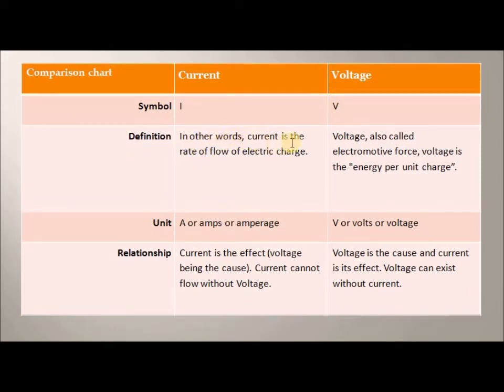In definition, in other words, current is rate of flow of electric charge. While voltage, also called electromotive force, is the energy per unit charge.